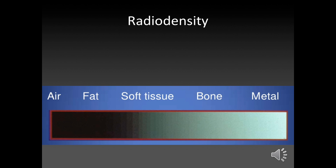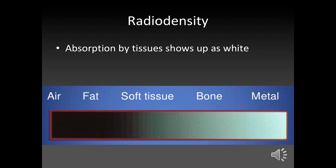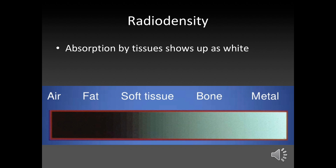There's something called radio density, and I think in third year you have a lecture — which you probably haven't had yet — but they talk about the Hounsfield scale. Has anyone heard of that? The Hounsfield scale is essentially a way of assigning a value or measuring density. Something that is less dense, like air, will show up as black, and something that is more dense, like bone or metal, will show up as white. And that's because of the absorption by the tissues.